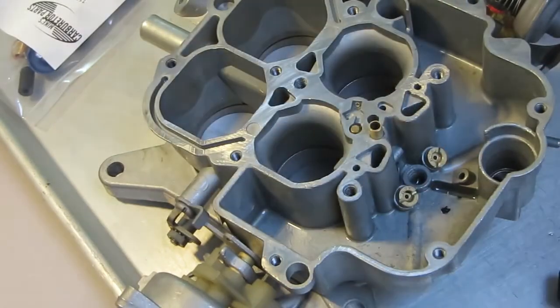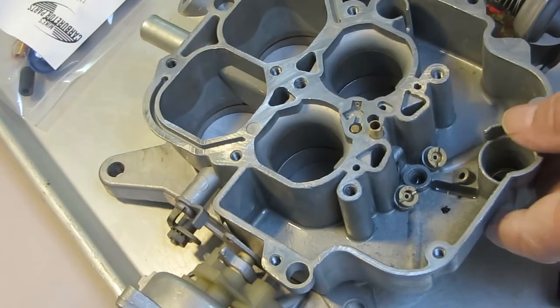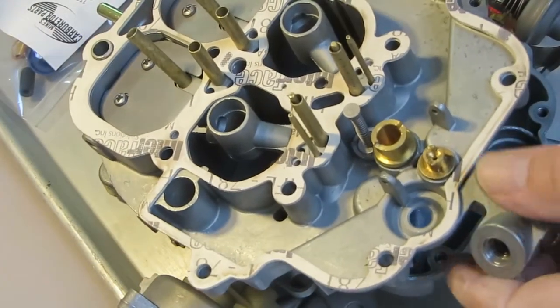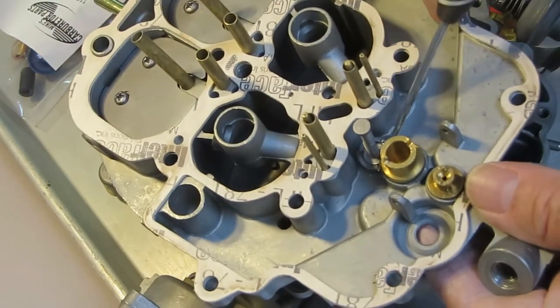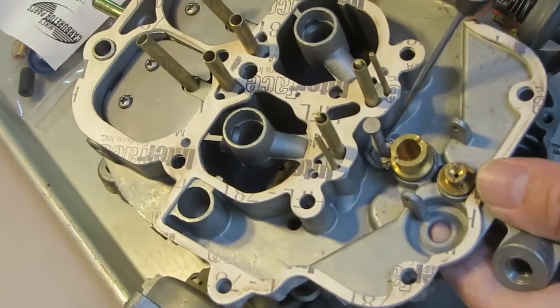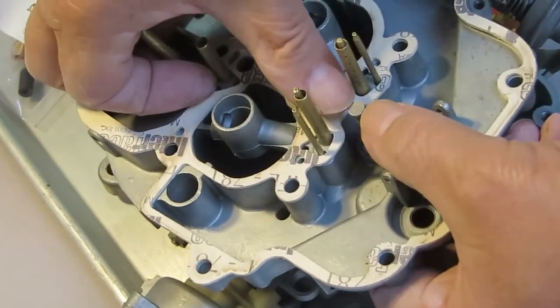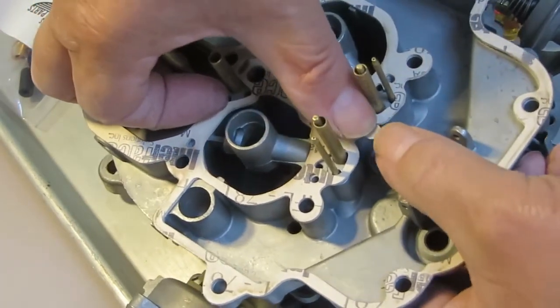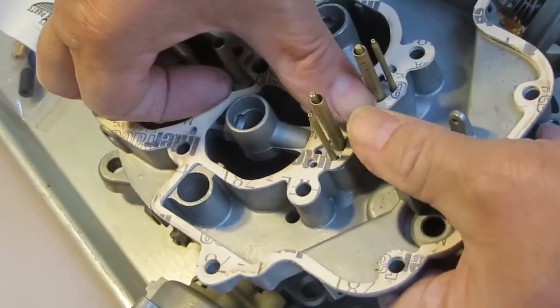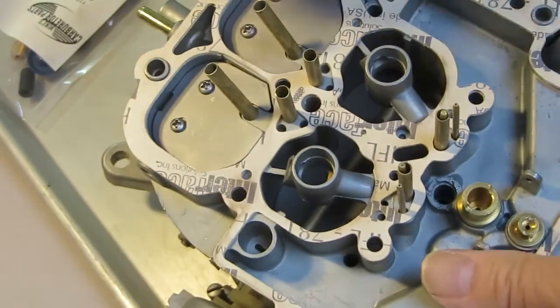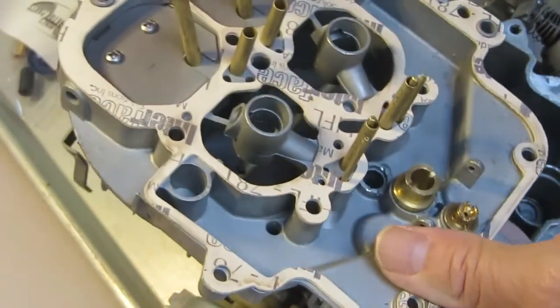Next I'll be taking out the power piston. They are usually staked over, so use an awl or a pick and remove the excess metal around it. Then take your fingers and push down and let go to snap it, and it will eventually pop out of the hole. Make sure it's nice and clean.